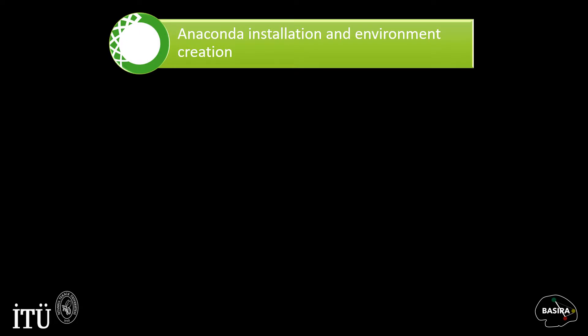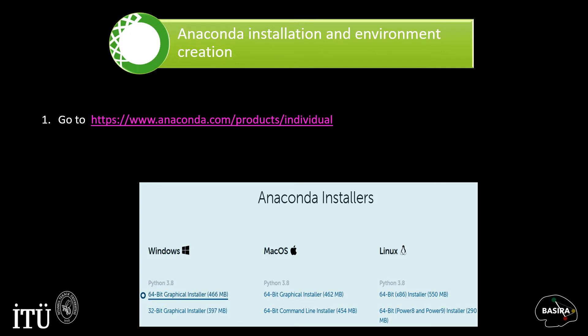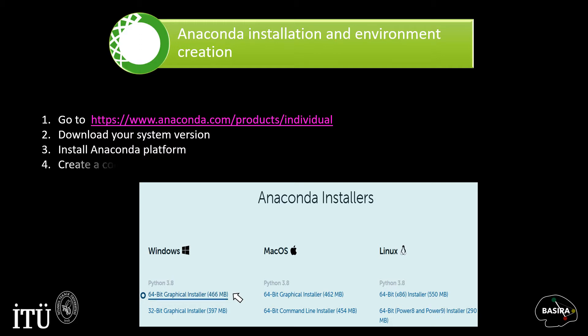In this step, you will download Anaconda from the following website. The webpage will appear like this. Choose the distribution dedicated for your operating system and click on the link to download it. For example, in my case, I downloaded Anaconda for Windows. Next, install the Anaconda platform. And finally, you need to create an Anaconda environment where you will install all the packages you need. Copy and paste this command in the terminal and specify the name of your environment and the Python version you want to use.